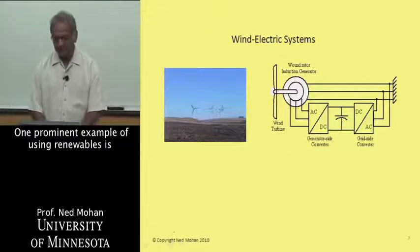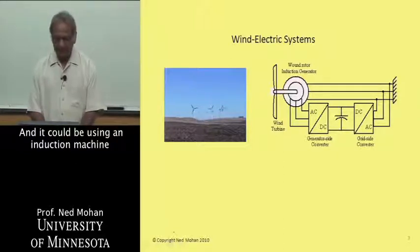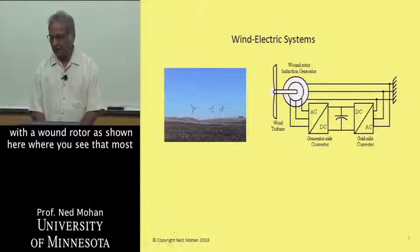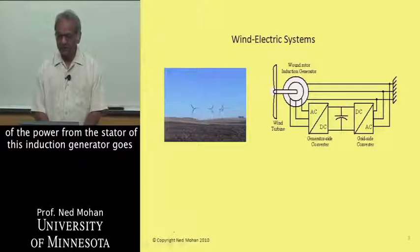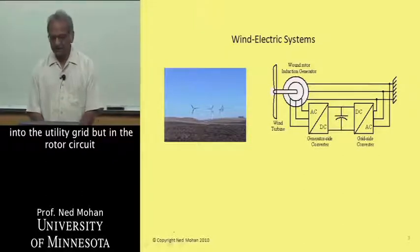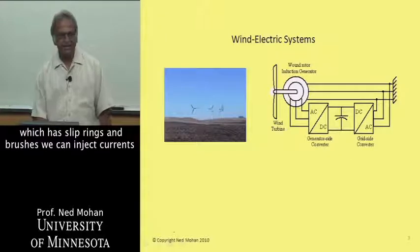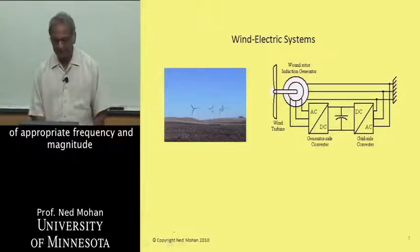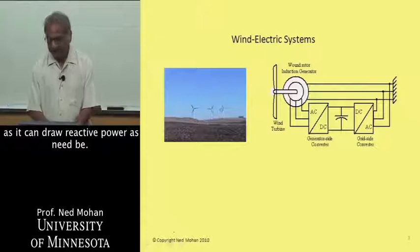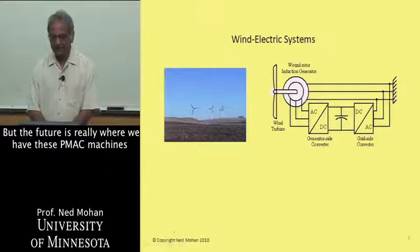One prominent example of using renewables is wind energy. It could use an induction machine with a wound rotor, as shown here, where most of the power from the stator of this induction generator goes into the utility grid. But in the rotor circuit, which has slip rings and brushes, we can inject currents of appropriate frequency and magnitude so that this can provide or draw reactive power as needed.